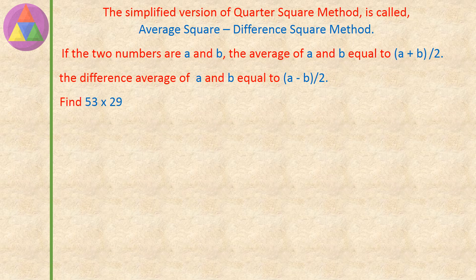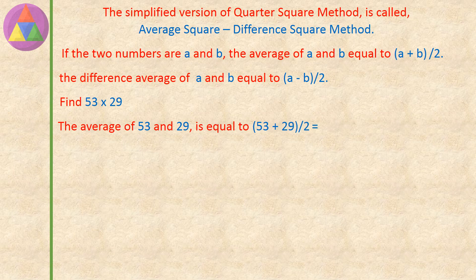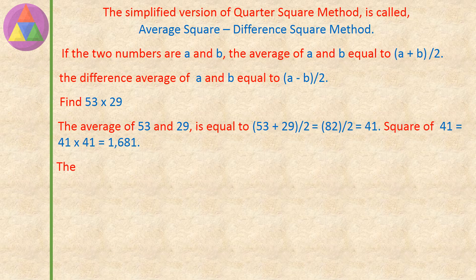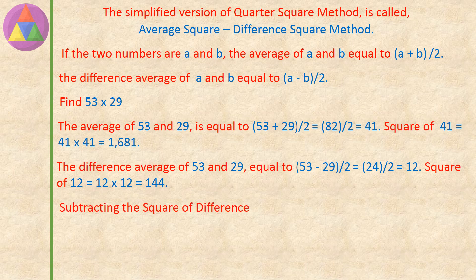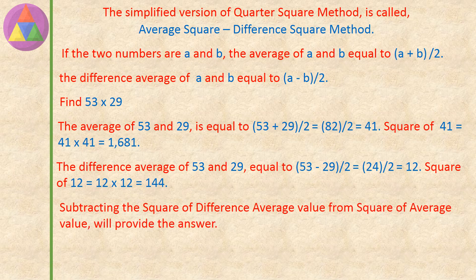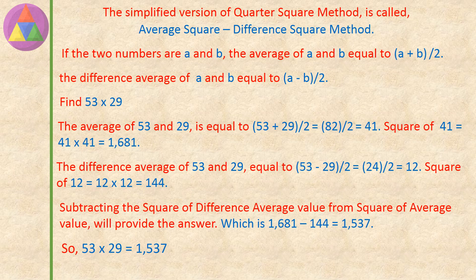Find 53 into 29. The average of 53 and 29 equals 53 plus 29, divided by 2, equals 82 divided by 2, equals 41. Square of 41 equals 41 into 41, which equals 1681. The difference average of 53 and 29 equals 53 minus 29, divided by 2, equals 24 divided by 2, equals 12. Square of 12 equals 12 into 12, equals 144. Subtracting the square of the difference average from the square of the average gives the answer: 1681 minus 144 equals 1537. So 53 into 29 is equal to 1537.